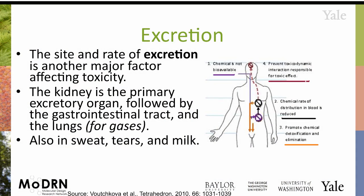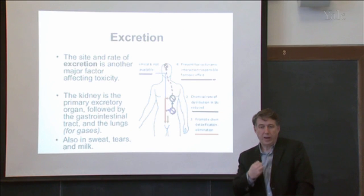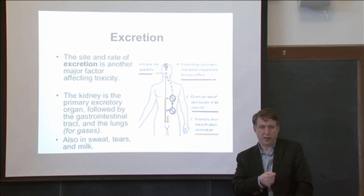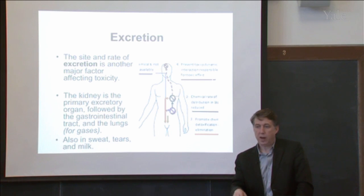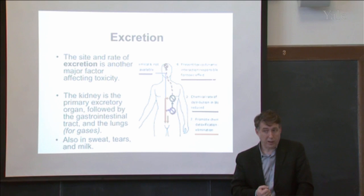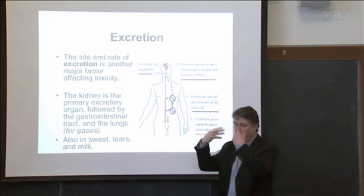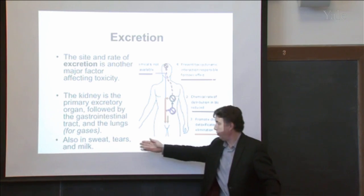When you look at the primary excretion organs, you'll want to know whether something is going to be easily excreted. One of the key things is water solubility — whether something is very water soluble and hence easily excreted. Maybe it's very fat soluble, so it will be more likely to transport across biological membranes. Making something more easily excreted is important, and excretion can happen through sweat, tears, milk, and the lungs.